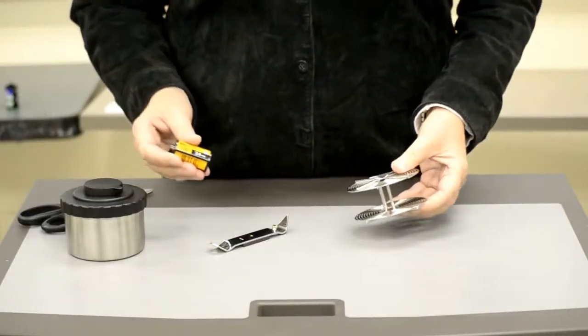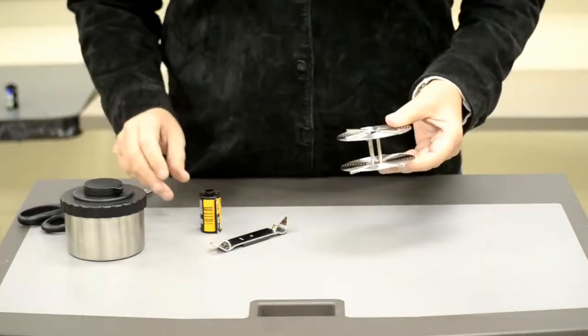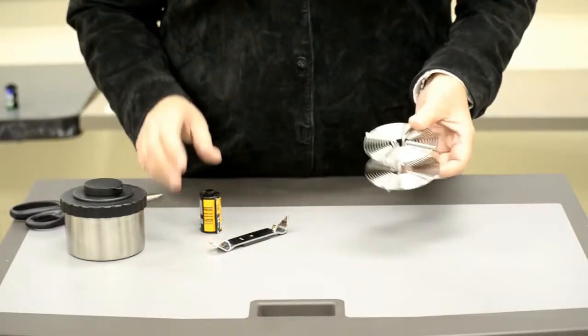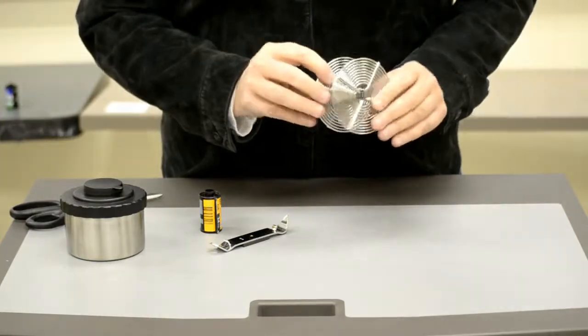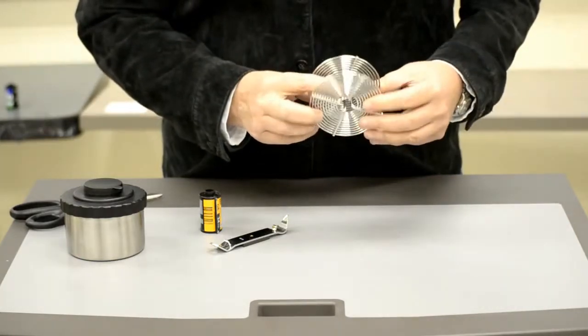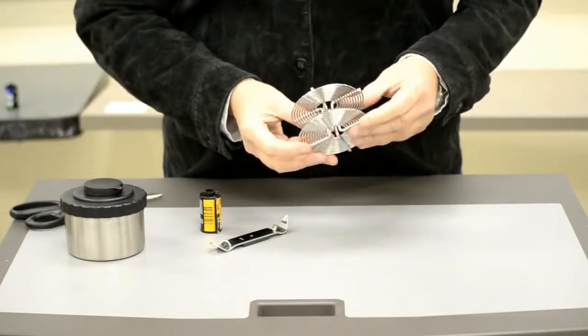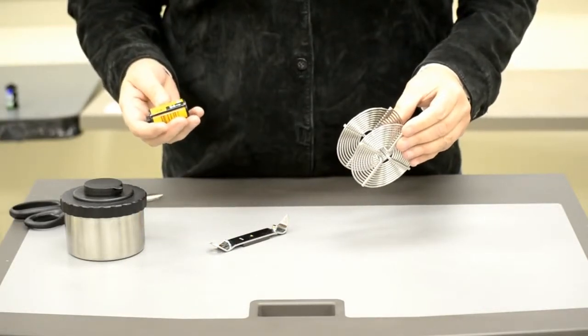Today I'm going to show you how to load film onto a stainless steel reel, specifically a Hughes stainless steel reel. This is for developing your own film in the darkroom.